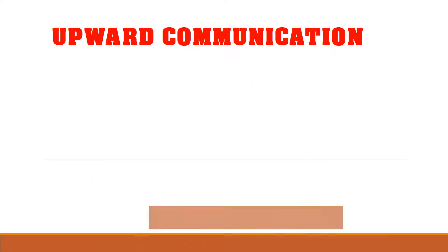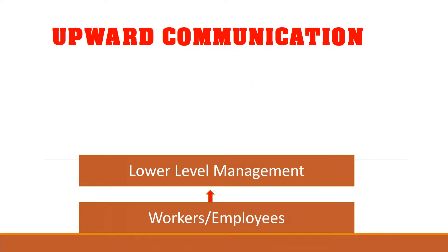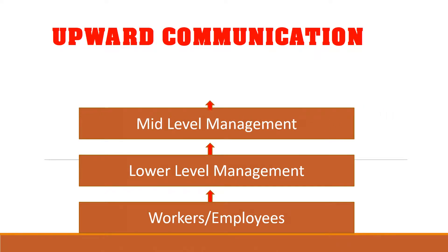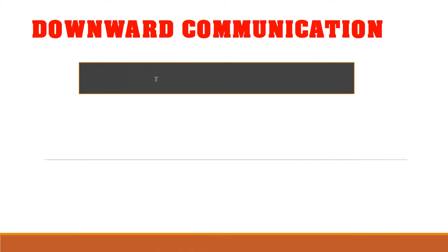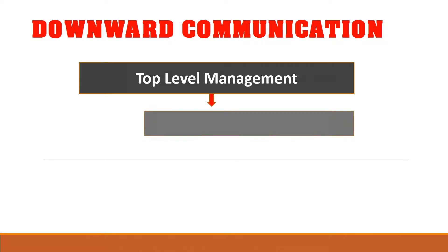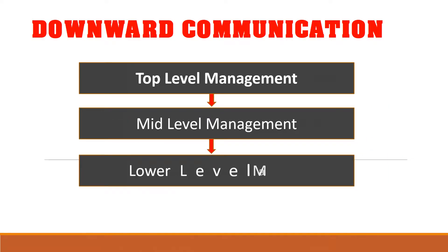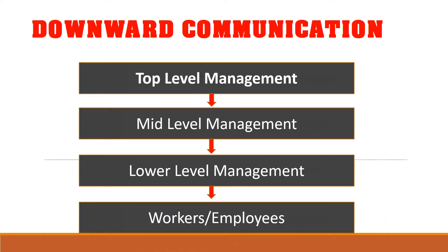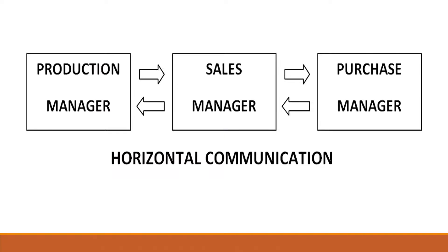Communication inside an organization can be categorized as upward communication, which is mainly done from a subordinate to a superior, or from the worker to the boss. Downward communication is from manager to subordinate. And sometimes there is horizontal communication between colleagues and peers at the same level — department to department and so on.